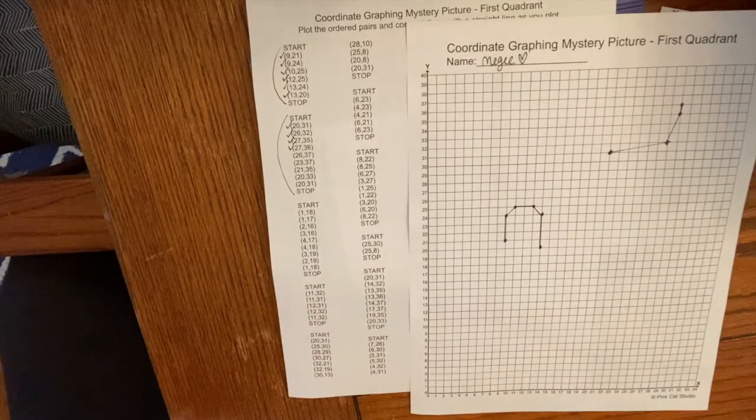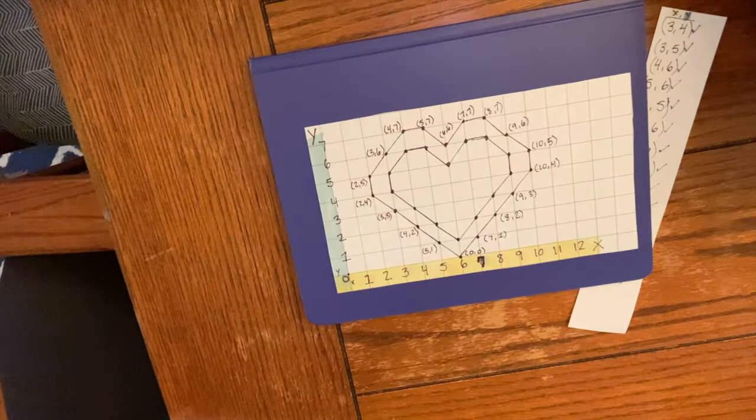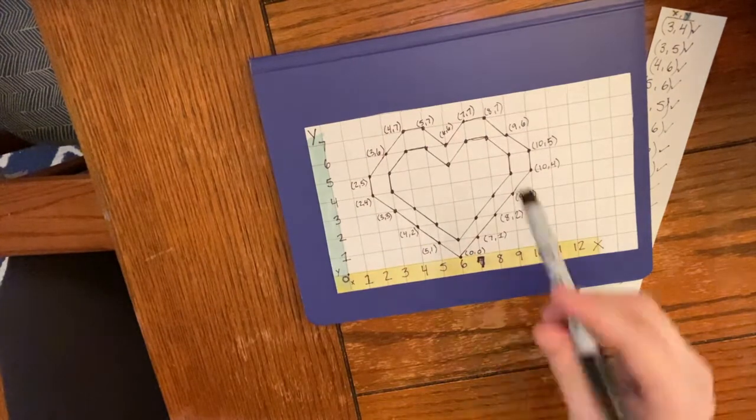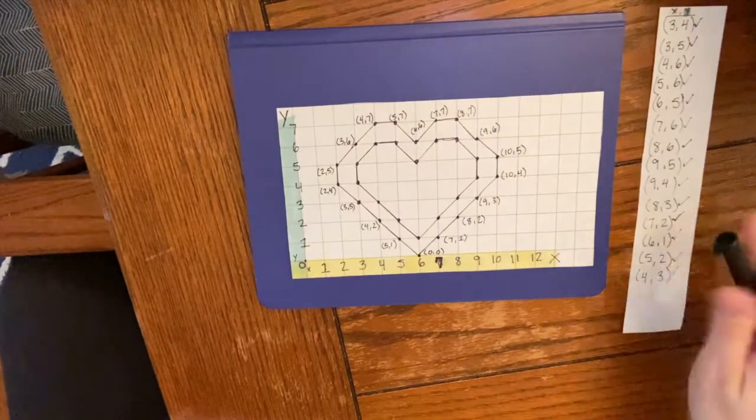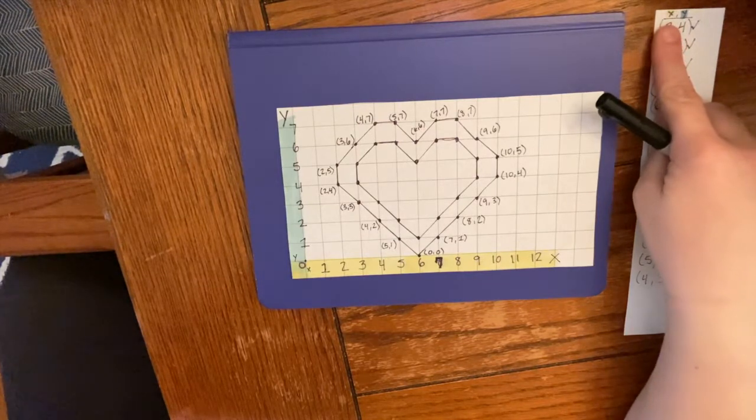So these are attached to the email if you want to do them, or you can make up your own just like that. Draw the dots, then you can write out the coordinates. Remember, x marks the spot, x always goes first.